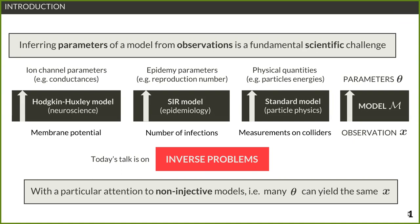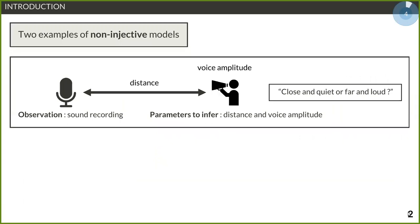To give two examples of what I mean by a non-identifiable model: one would be the case of a sound recording, where you have a speaker saying something and you want to infer the distance of the speaker and also their voice amplitude. You naturally end up with an indetermination — not knowing whether the speaker is close and quiet, or far and loud.